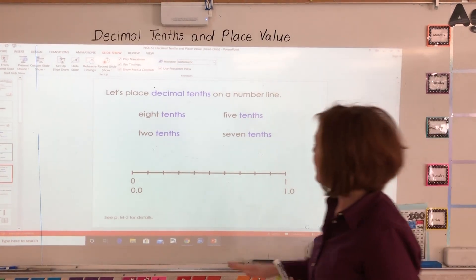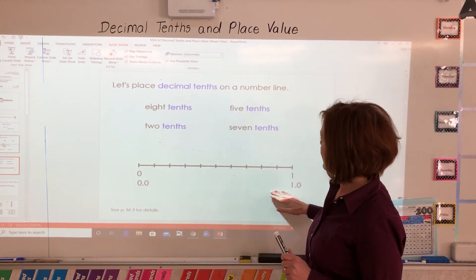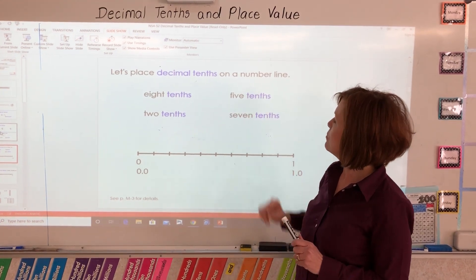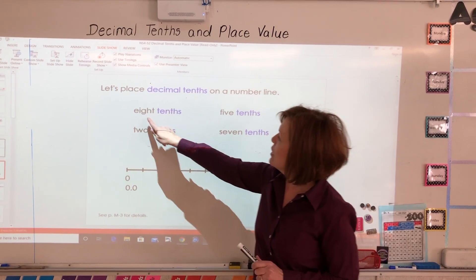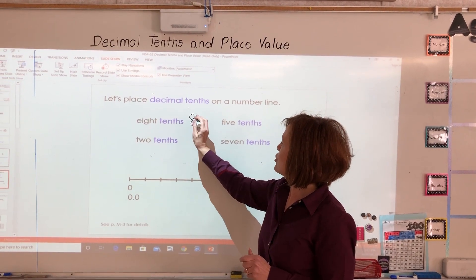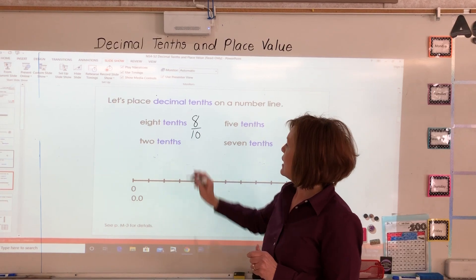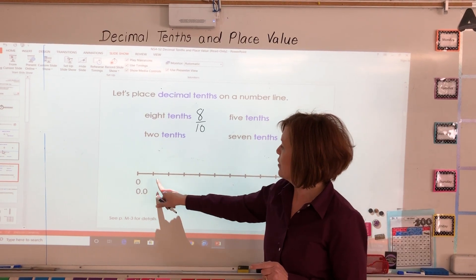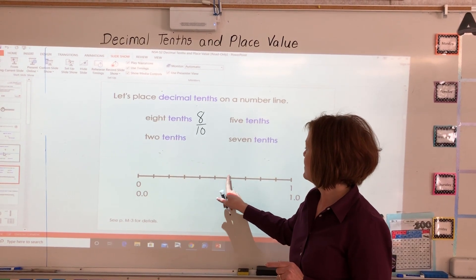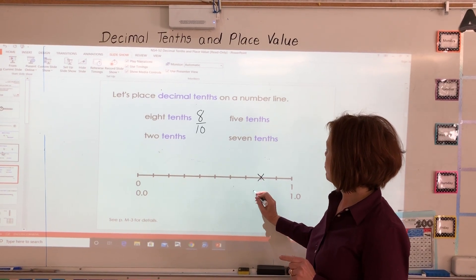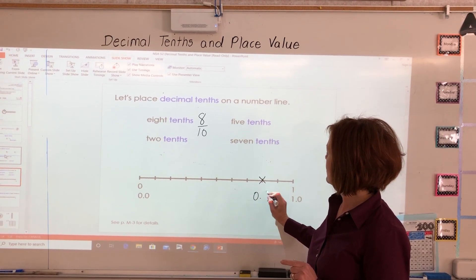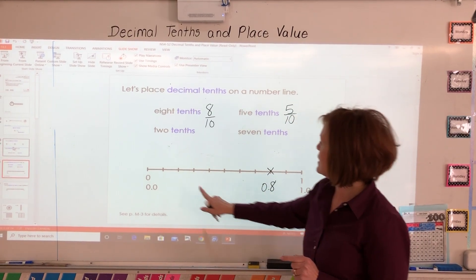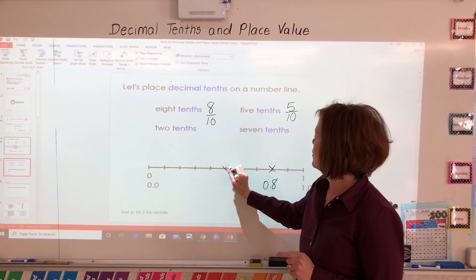On a number line, it's like looking at a fraction number line. When we go from zero to one, these fractional amounts can also be made into decimal amounts. Starting with eight tenths, which as a fraction looks like this — if something's divided into ten equal parts, eight tenths refers to eight of those parts. So I'm going to put that there and write it as a decimal.